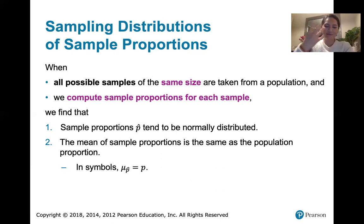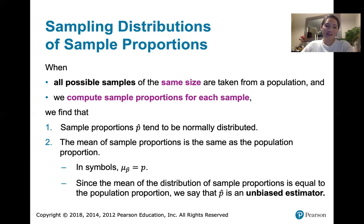It's a lot of p's, but it's giving us what we want — that's a very good thing. Since the mean of the distribution of sample proportions is equal to the population proportion, we say that p-hat is an unbiased estimator.